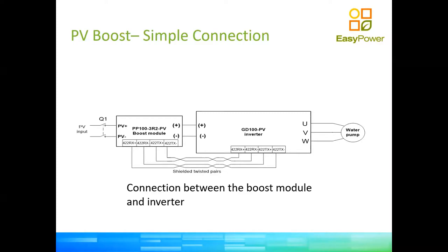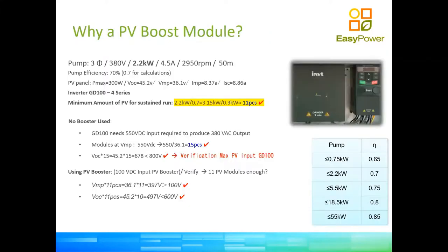These components typically go inside an enclosure. Mentally picture that enclosure as having a GD100 inverter, a boost module if it's less than 2.2 kilowatts, and a PV switching board if it's more than 4.4 kilowatts. An example shows a 3-phase 2.2 kilowatt inverter — with no booster you need 15 modules, but with a booster you only need 11 modules. The inverter and PV booster fit side by side and wire quite easily in a small enclosure. This equipment is IP20 internally and cannot be placed outside — it must be in an enclosure.